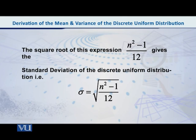If we take its square root, what do we get? We get the standard deviation of the discrete uniform distribution.